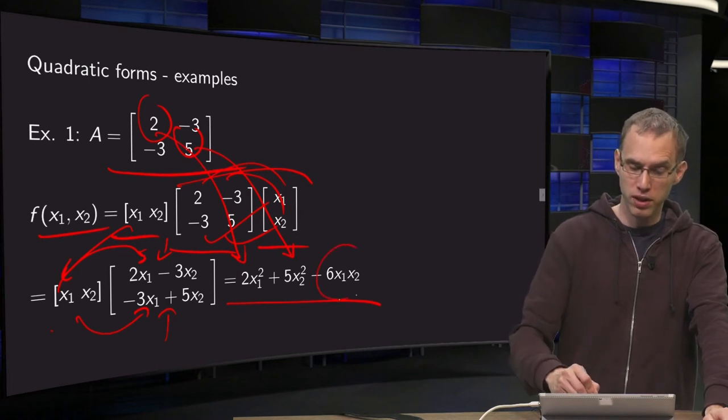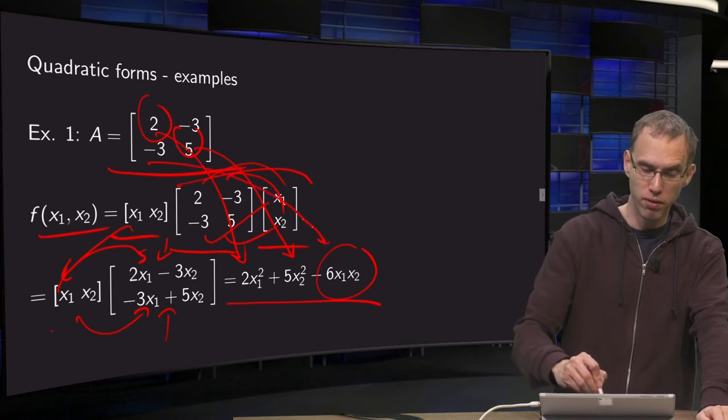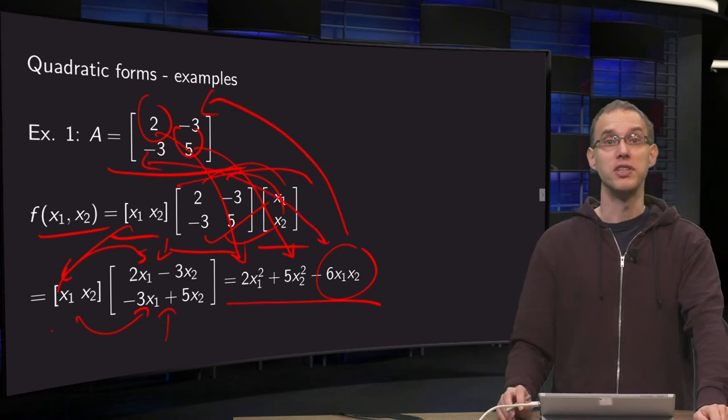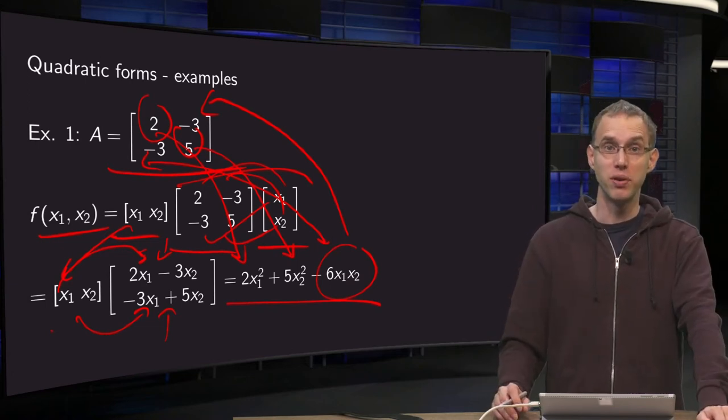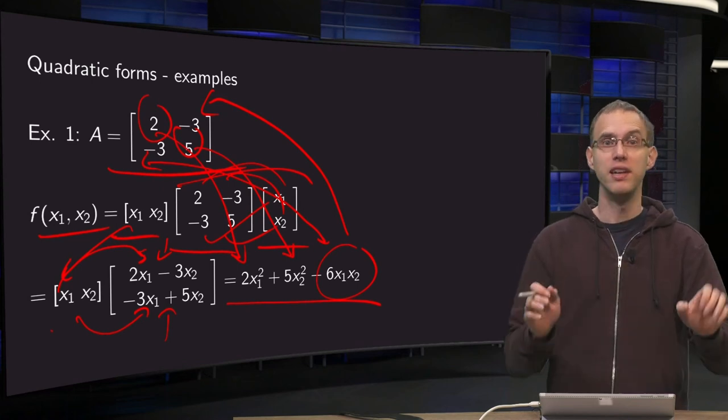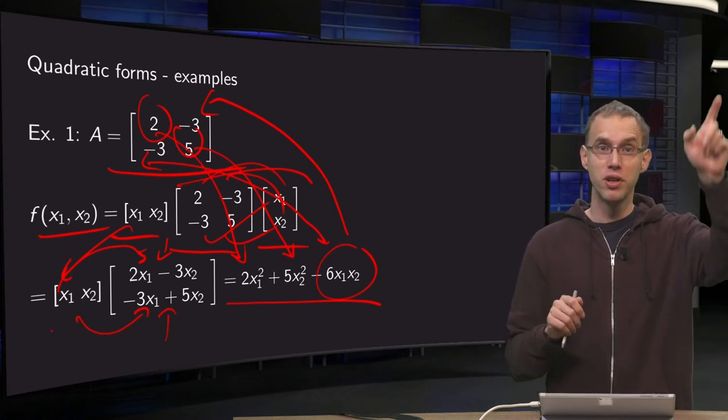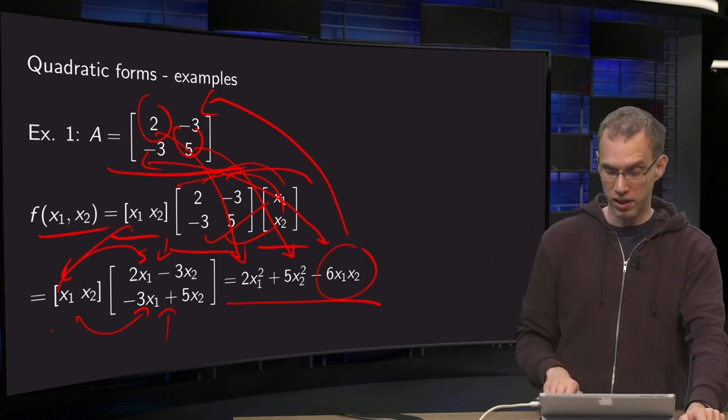What happens with the mixed terms? The x1 and x2 term, the minus 6, is actually shared between the off-diagonal elements. Both off-diagonal elements get the minus 3 and together they form the minus 6x1x2. So if you have a matrix you can immediately write down what the quadratic form is. First, usually you pick the diagonal elements and then you look at the off-diagonal elements.